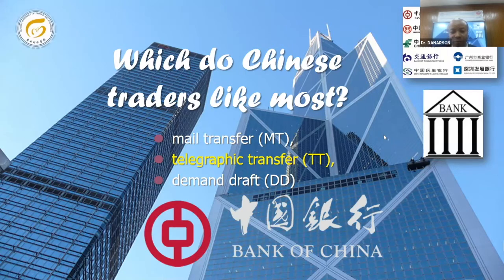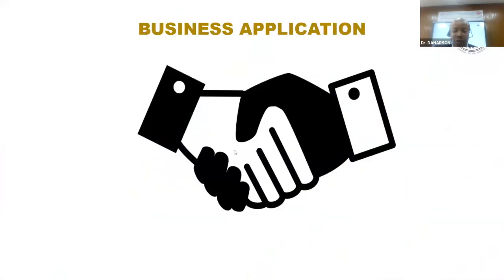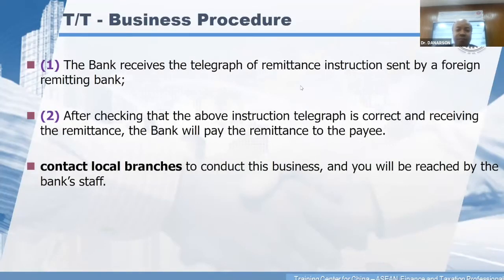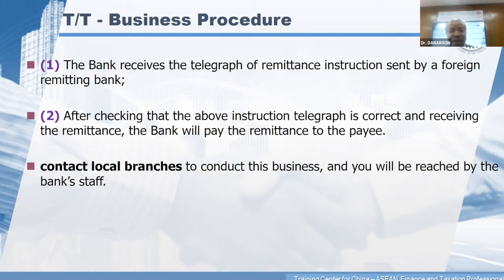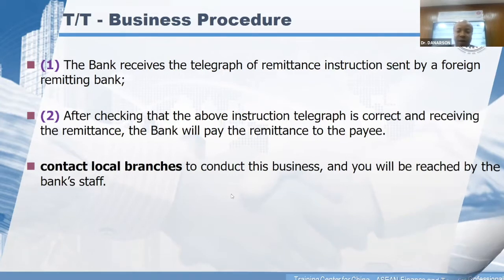Many companies in China prefer TT, and I'll give you the reasons with this business application. Let's start with business procedures. The bank receives the telegraph of remittance instruction sent by the foreign remitting bank. After checking that the instruction telegraph is correct and receiving the remittance, the bank will pay the remittance to the payee and contact local branches to conduct this business. The bank staff will then reach the beneficiary.